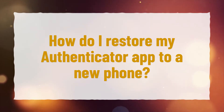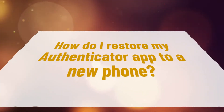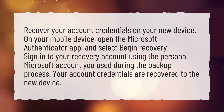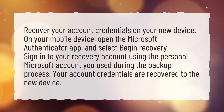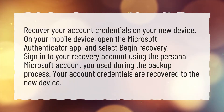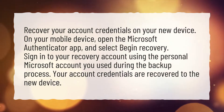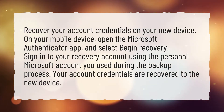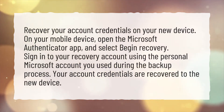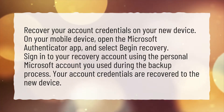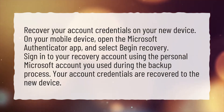How do I restore my Authenticator app to a new phone? Recover your account credentials on your new device. On your mobile device, open the Microsoft Authenticator app and select Begin Recovery. Sign into your recovery account using the personal Microsoft account you used during the backup process. Your account credentials are recovered to the new device.